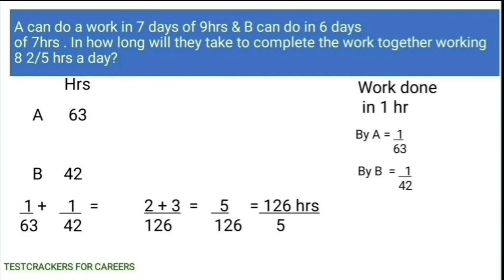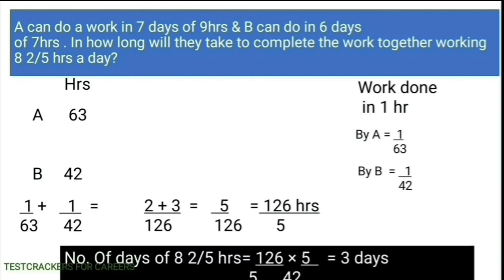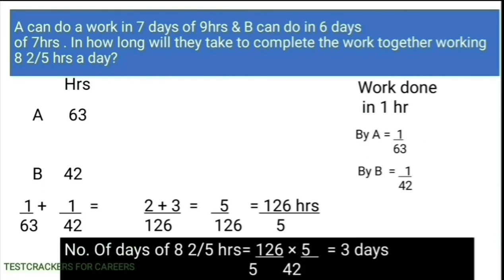They were asked the time taken by A and B if they work 8 and 2 by 5 hours a day. So we divide 126 by 5 by 8 and 2 by 5 and we get 3 days. The time taken by A and B to complete the work working 8 and 2 by 5 hours a day is 3 days.